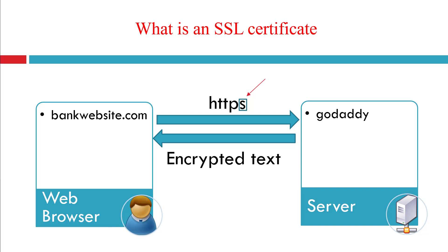We can achieve HTTPS by using an SSL certificate. SSL stands for Secured Sockets Layer. It is a small data file that digitally binds a cryptographic key to an organization's details. When installed on a web server, it activates the padlock and the HTTPS protocol, allowing a secure connection from the web server to a browser. HTTPS encrypts the data before sending it, so even if a hacker intercepts it, the data will be unreadable as it is in encrypted form.